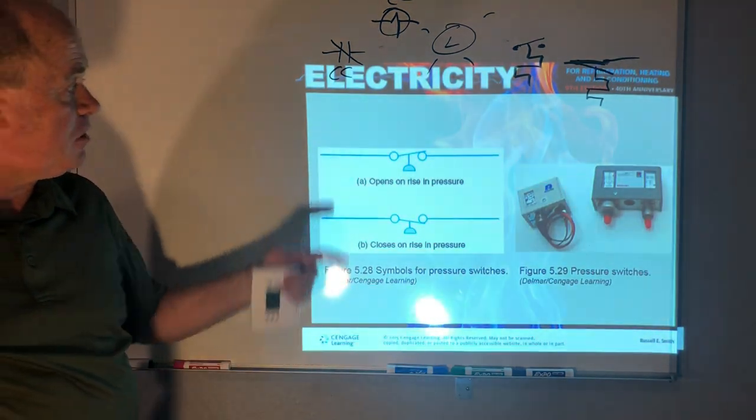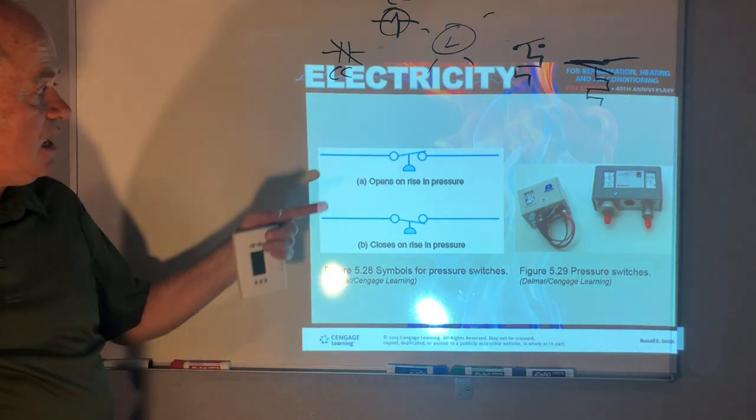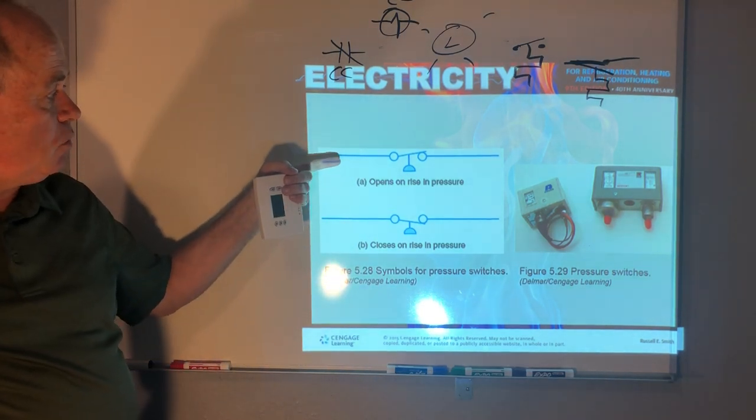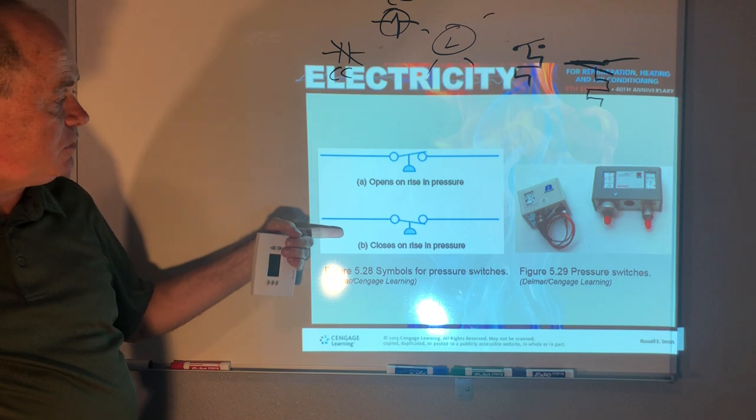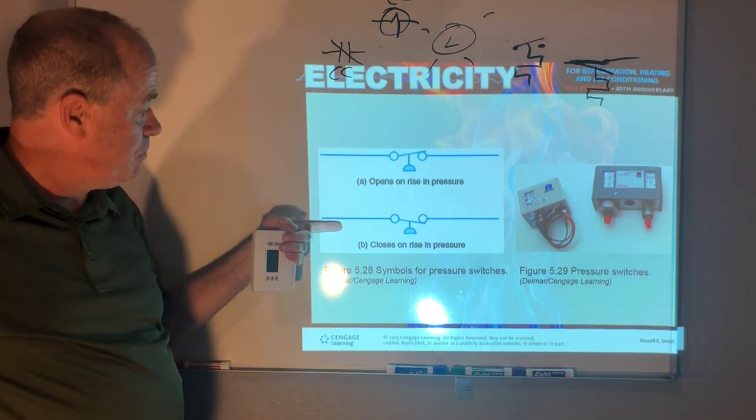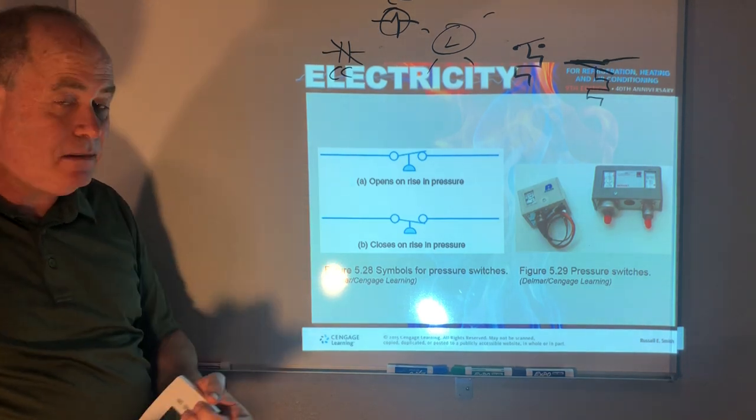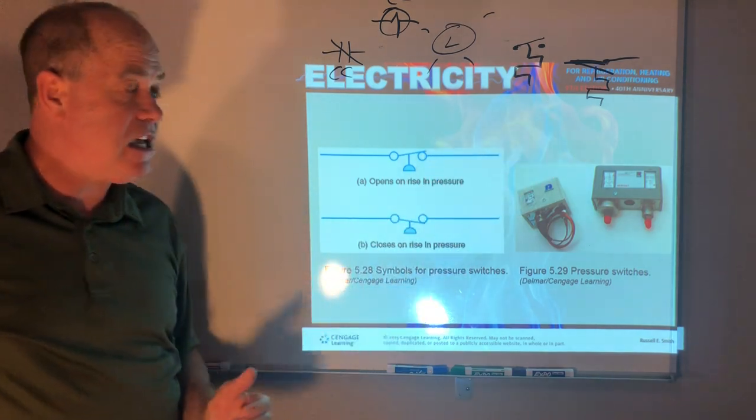Now here's a pressure switch. This would be a high pressure switch or high pressure cutout. This is a low pressure switch or low pressure control.